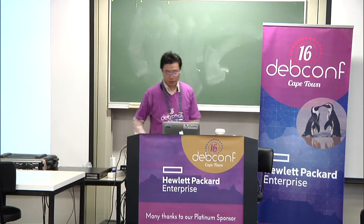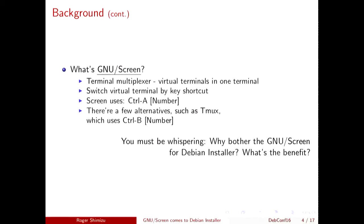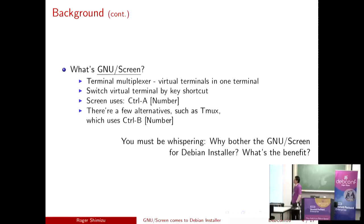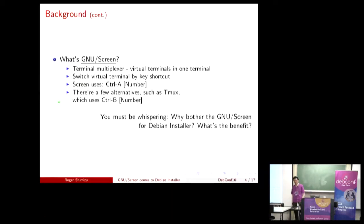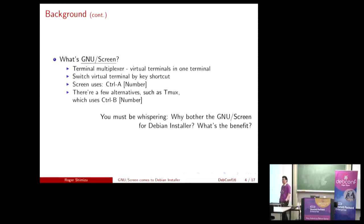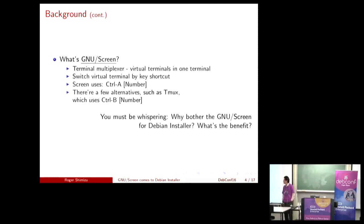What is GNU screen? First, it's a terminal multiplexer — it means in one real terminal you can have multiple virtual terminals and you can switch from one virtual terminal to another by a shortcut key. In screen the shortcut is Ctrl+A then 1, 2, 3, 4. Screen alternatives like tmux use Ctrl+B then 1, 2, 3, 4.